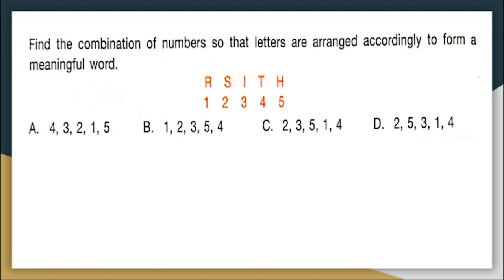The best way to solve such questions is to check with the options. Look at option A. What does 4 stand for? 4 stands for T, 3 stands for I, 2 stands for S, 1 stands for R and 5 stands for H. So the word that you get when you arrange these numbers in the given order as in option A is T-I-S-R-H. Is there any meaningful word like that? No. So option A is not your correct answer.